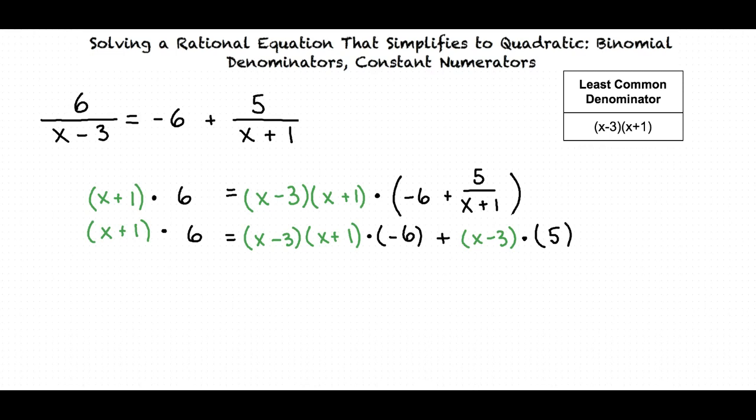Now we distribute the values in order to remove all the parentheses. Let's begin with the left-hand side of our equation. x plus 1 times 6 equals 6x plus 6.